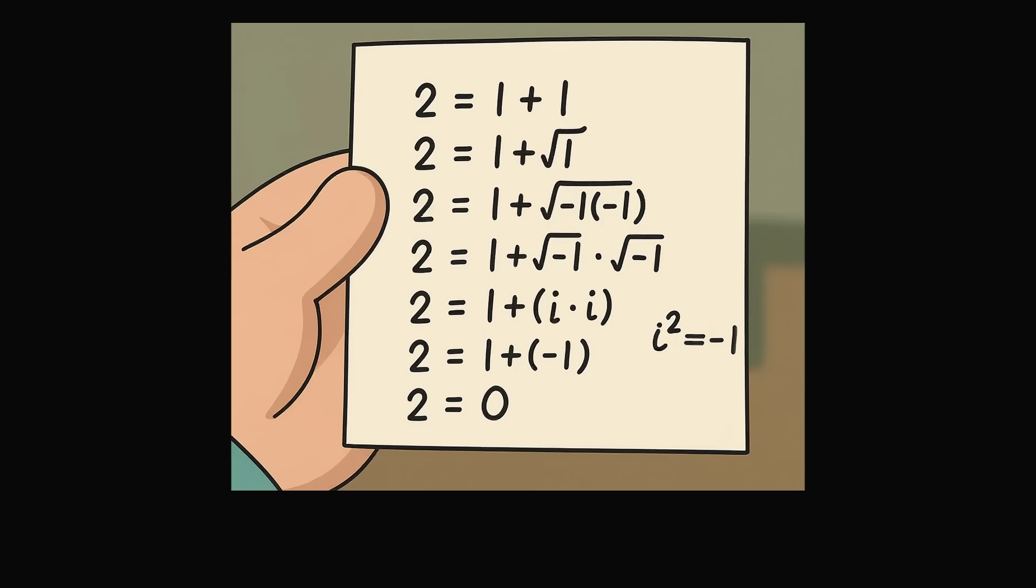We have an absurd conclusion that 2 is equal to 0, but we started out that 2 is equal to 1 plus 1, and every step was seemingly true. Can you find the mistake?